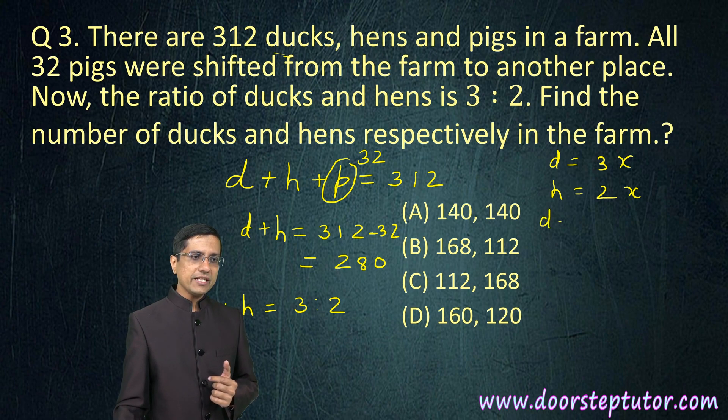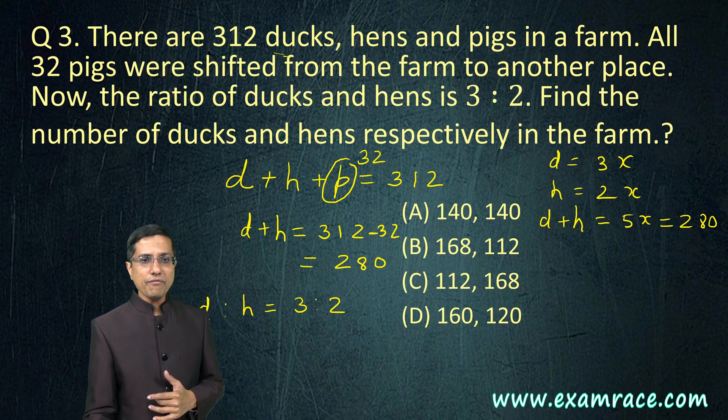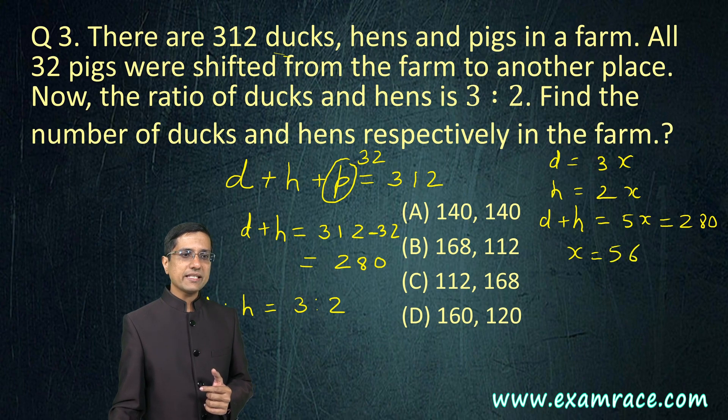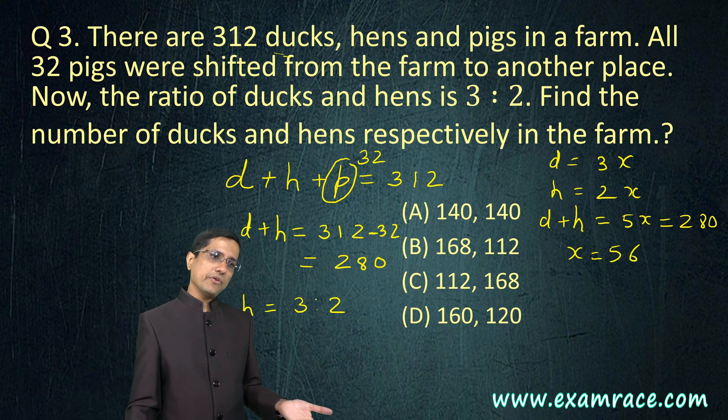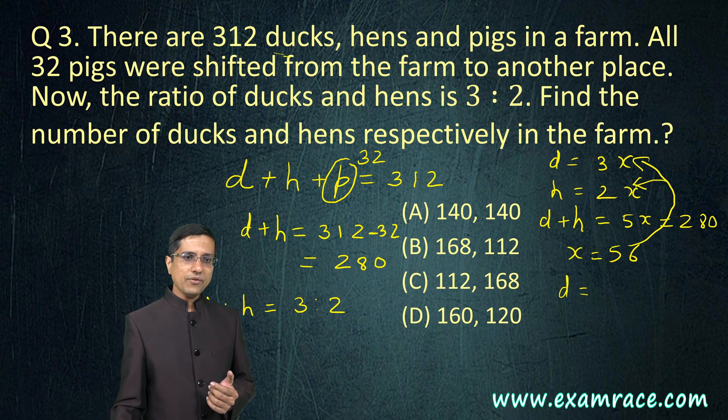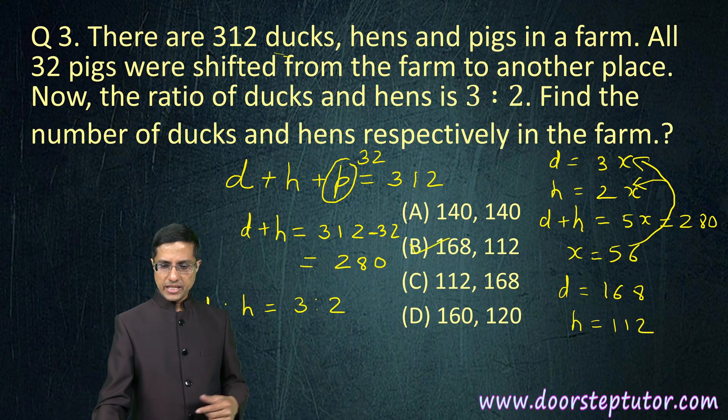If we total these two, d plus h equals 3x plus 2x which is 5x and this we know to be 280. From here we can find our value of x. x becomes 280 by 5 or 56. Now since we know the value of x, we can substitute it here and arrive at the value of d and h. If you calculate it, d would come out to be 168 and h would come out to be 112. This becomes the correct answer B.